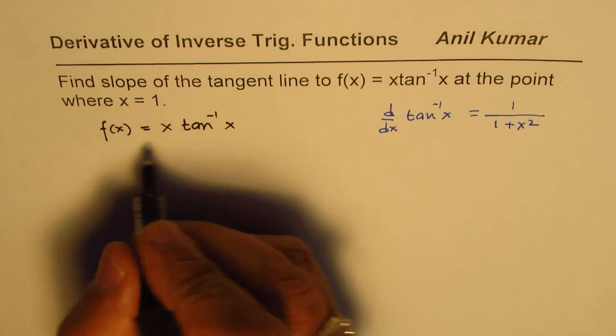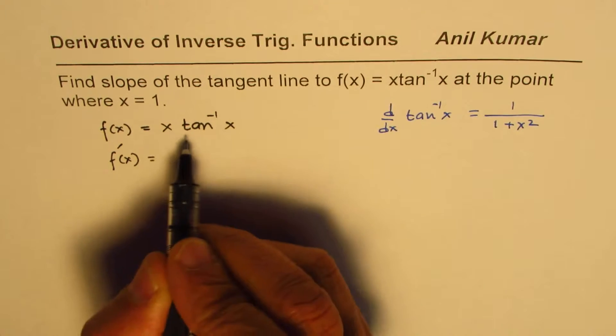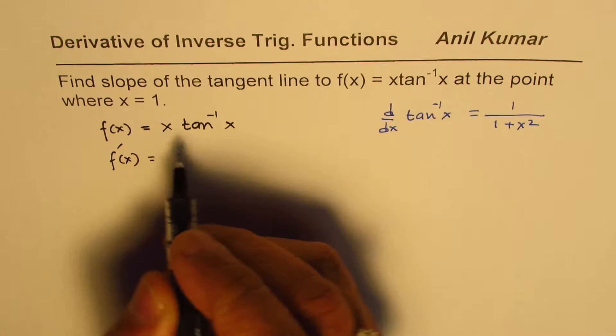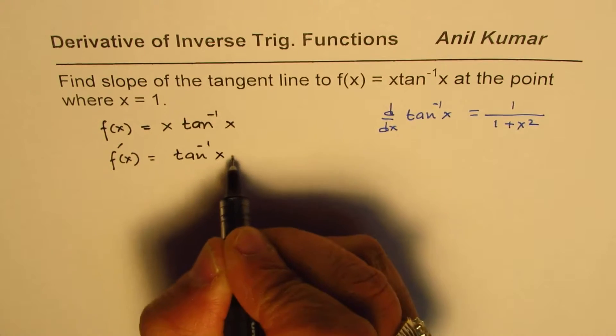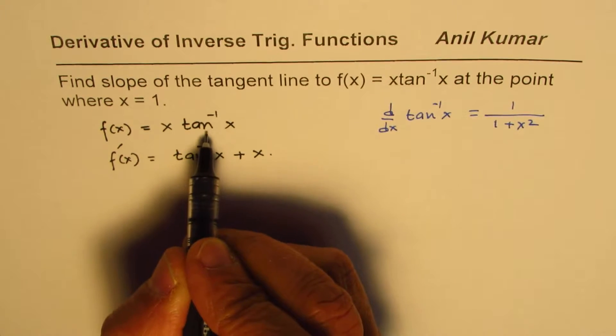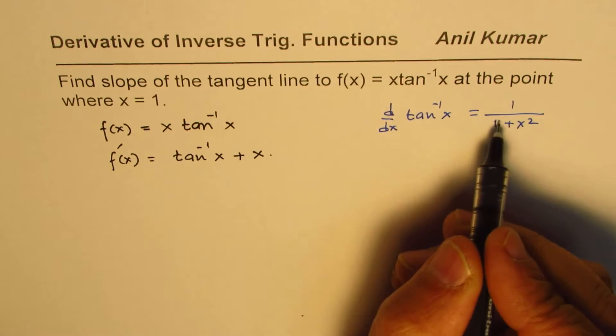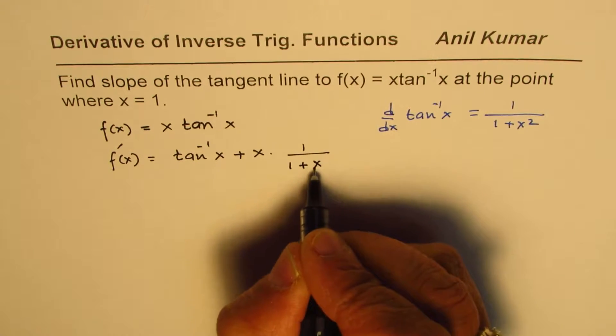So we can write f'(x) equals, if you apply the product rule, derivative of x is 1, so we get tan⁻¹x plus x times derivative of tan⁻¹x, which is 1/(1 + x²). That is what we get.